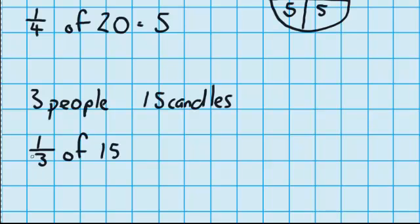The 15 here are 15 candles. The denominator, which is a 3, is there because there are 3 people. And the numerator up the top, which is a 1, is there because I'm interested in how many candles one person will get.